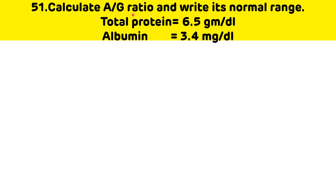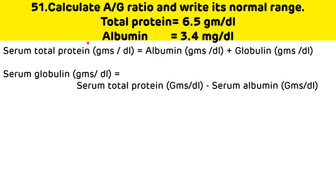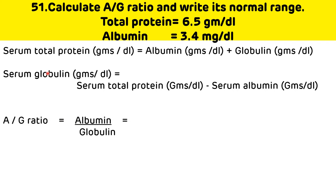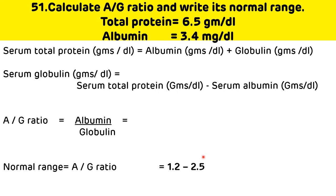Calculate the A/G ratio and write its normal range. Given: total protein = 6.5 g/dL and albumin = 3.4 g/dL. Since total protein = albumin + globulin, globulin = serum total protein minus serum albumin. The A/G ratio is calculated by dividing albumin by globulin. The normal range of the A/G ratio is 1.2:1 to 2.5:1.